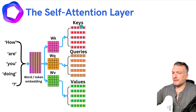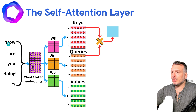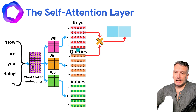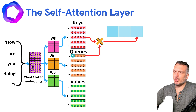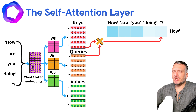Now we have keys, queries, and values. By using the keys and queries, we're going to build an interaction score between the different words. We take the first query and the first key and compute the dot product — this gives an interaction score between the word 'how' and itself. Taking the first query and the second key gives an interaction score between 'how' and 'are'. Continuing this process with the first query and the third key gives an interaction score between 'how' and 'you'. We repeat for all keys to obtain an interaction vector between 'how' and all other tokens in the input sequence.